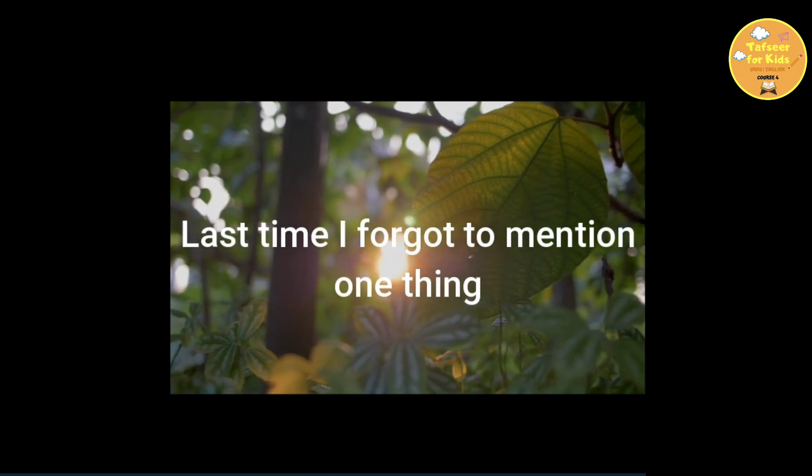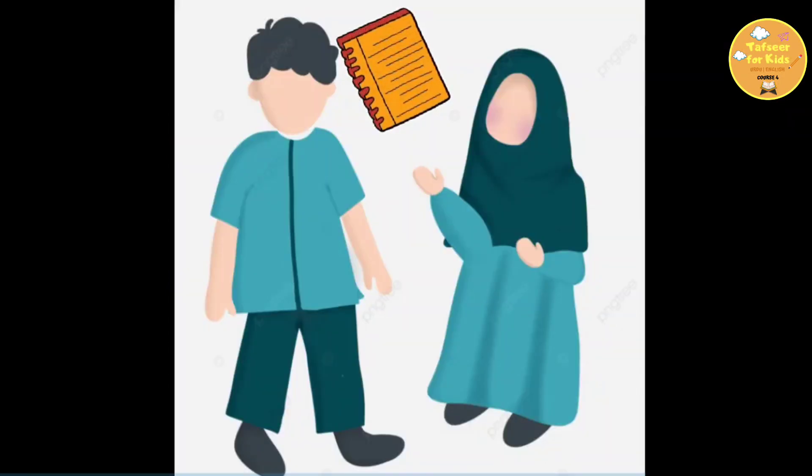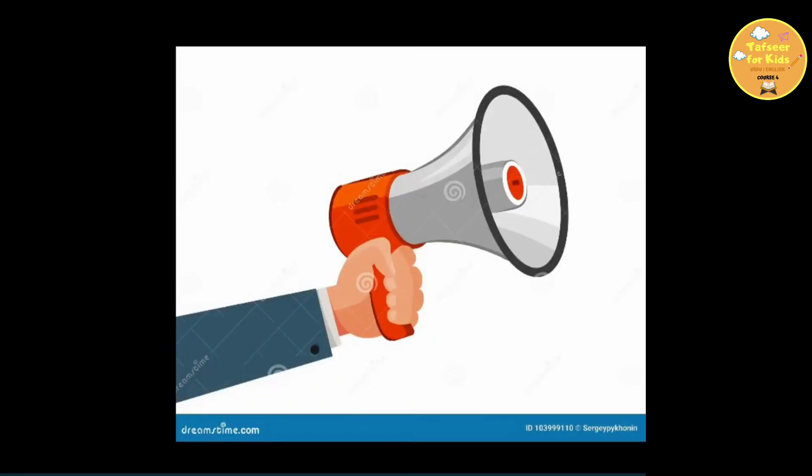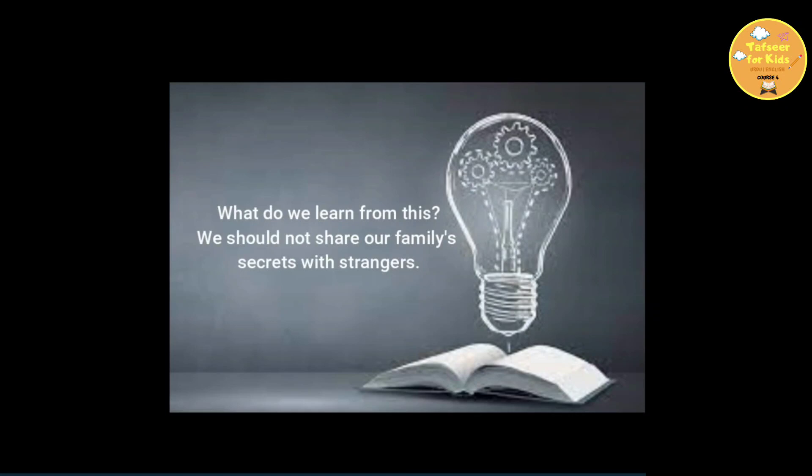Last time I forgot to mention one thing. And that was the lesson learned from the behavior of the sister of Musa alayhi salam. She was so smart and intelligent that she didn't let anyone suspect that she was the baby's sister. She could have shouted out that, oh, this is my baby brother and just take good care of him. No, she didn't do that. She was smart and she knew that it was dangerous. Now, my dear children, what do we learn from this?